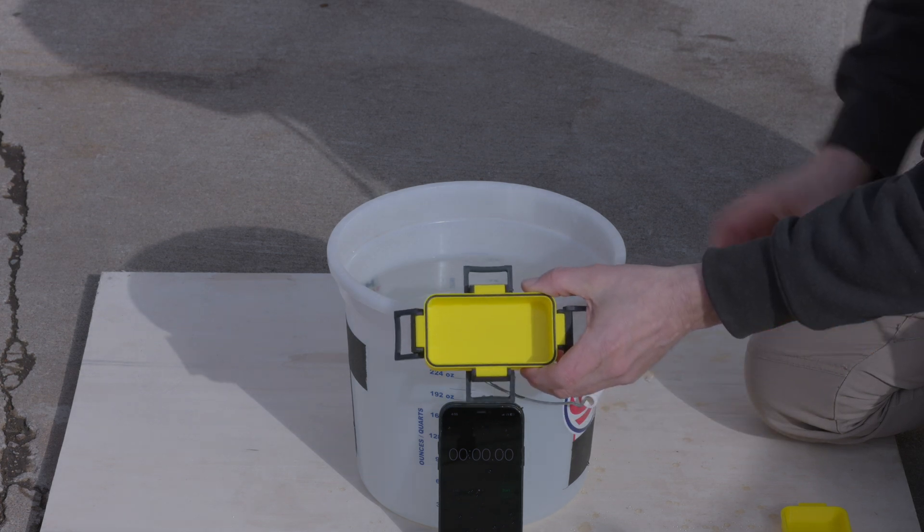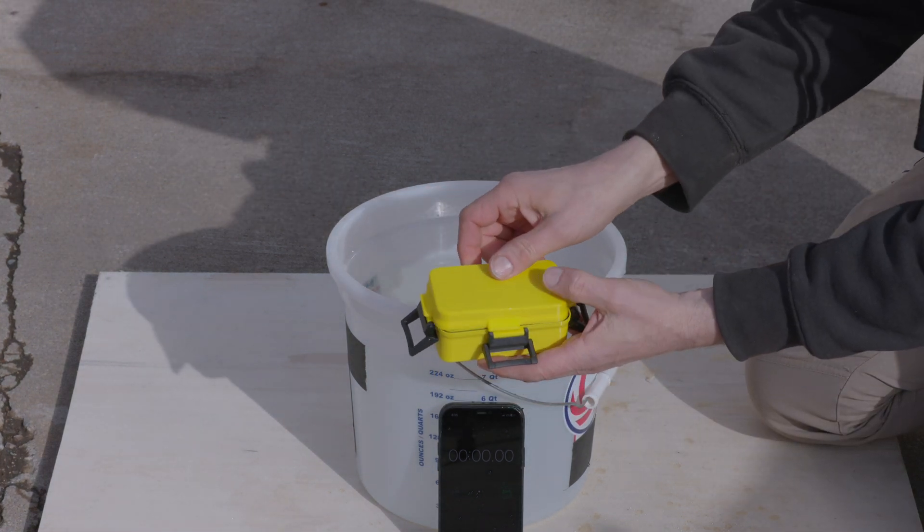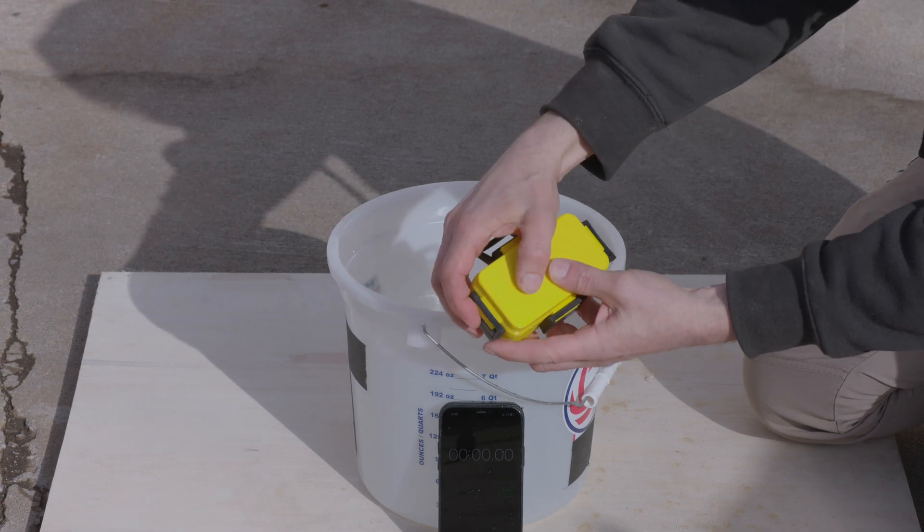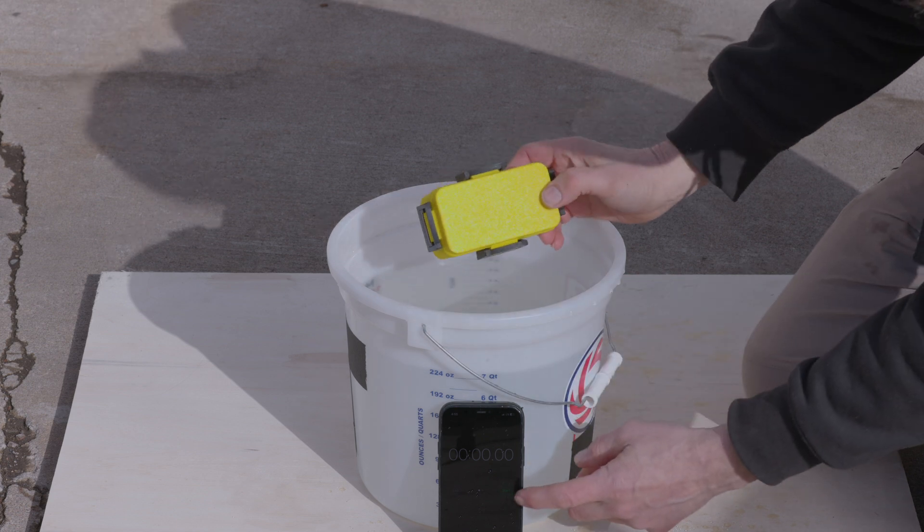For the waterproof test, we'll be placing a blue shop towel inside the case. If the shop towel gets wet, it will turn a dark blue. We'll hold each box under the water for 15 seconds, then take it out and see how much water, if any, got inside.